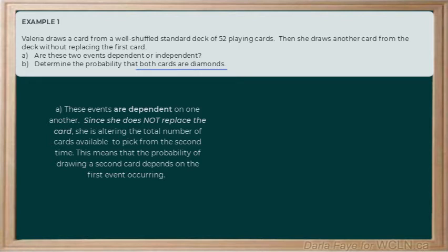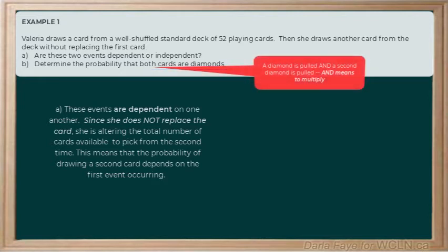So with that in mind, let's take a look at part B. Determine the probability that both cards are diamonds. In other words, we would like to know the probability that a diamond is pulled and a second diamond is pulled. So we'll describe those as being our two events. Recall that when we see that word 'and', we need to be able to multiply, and we'll see that as we pull up our equation. So recall that our equation is the probability of event A and B, that's what we're looking for, is equal to the probability of A multiplied by that conditional probability of event B.